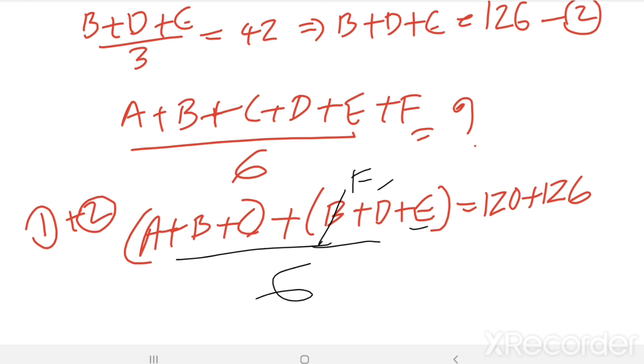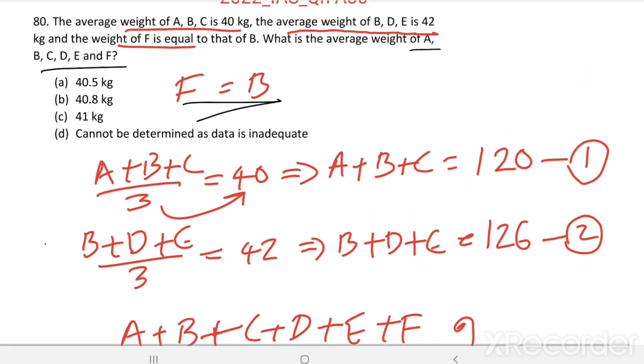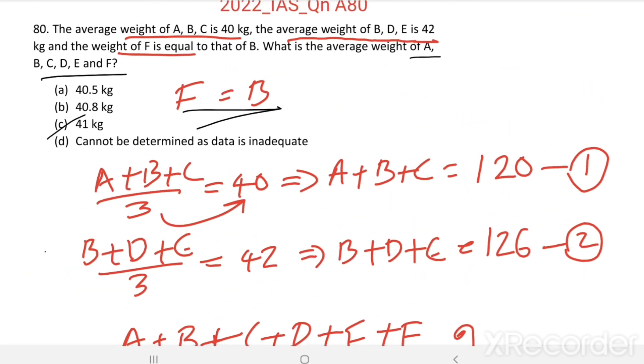Dividing this by 6, we get the average of A, B, C, D, E, and F. So average of A, B, C, D, E, and F equal to 246 divided by 6 equal to 41 kg. Option C is the right answer.